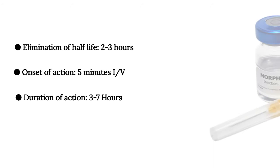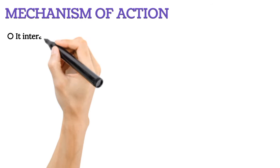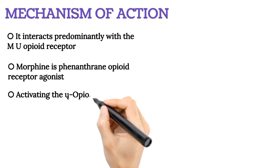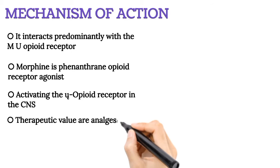Mechanism of Action: Morphine interacts predominantly with the MU-delta receptor. It is a phenanthrene opioid receptor agonist. Its main effect is binding to and activating the MU-opioid receptor in the CNS. The primary actions of therapeutic value are analgesia and sedation.